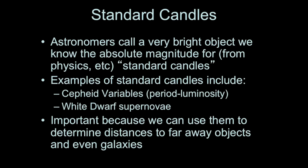Let's continue talking about the concept of a standard candle, and then we'll get into the idea of look-back time in astronomy. A standard candle is an object in space that we know the absolute magnitude or luminosity for, and is also very bright. Examples include Cepheid variable stars and white dwarf supernovae, and these are both important because we can use them to determine the distances to other galaxies.